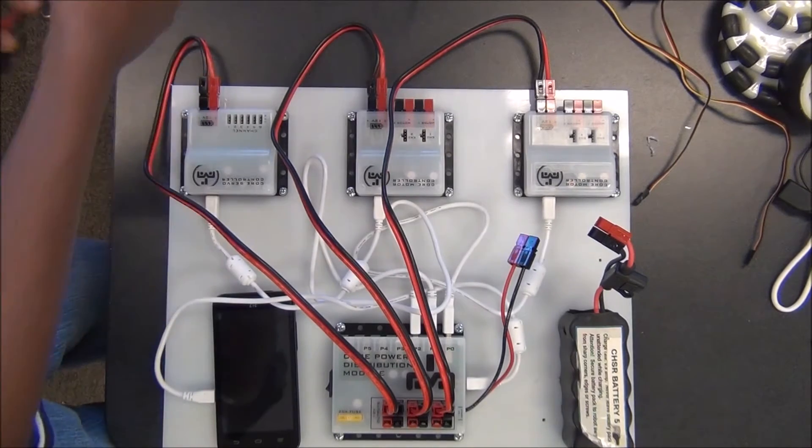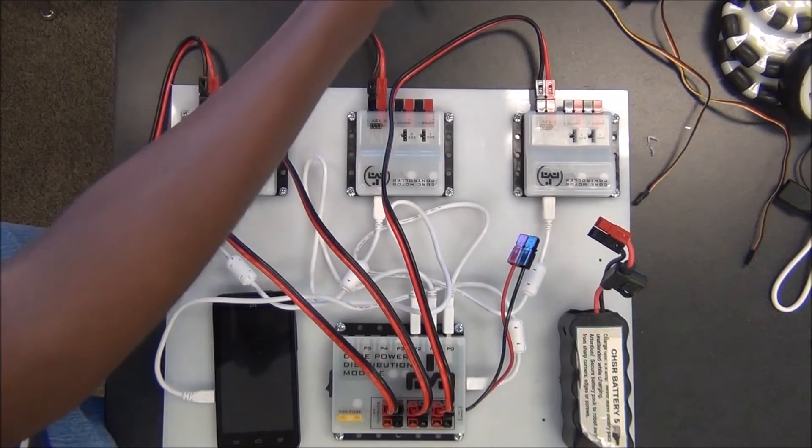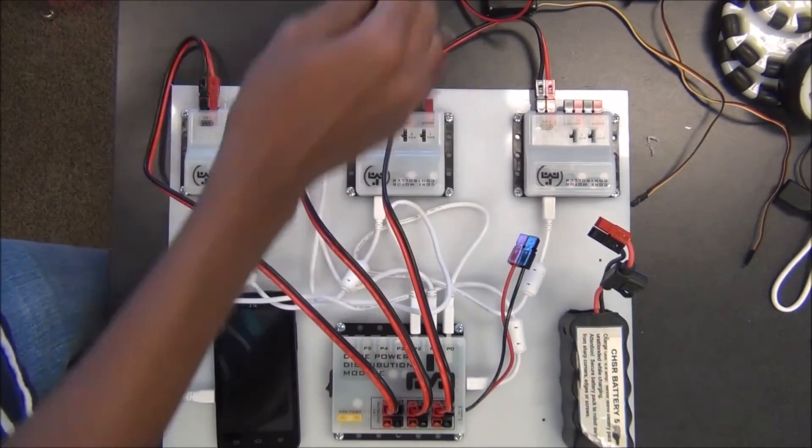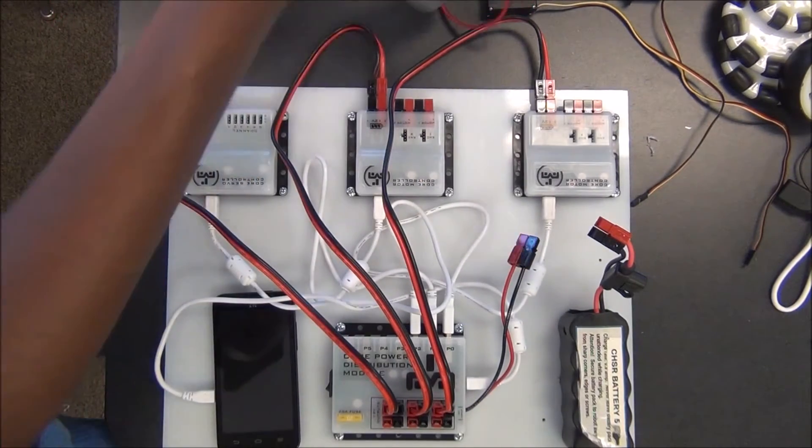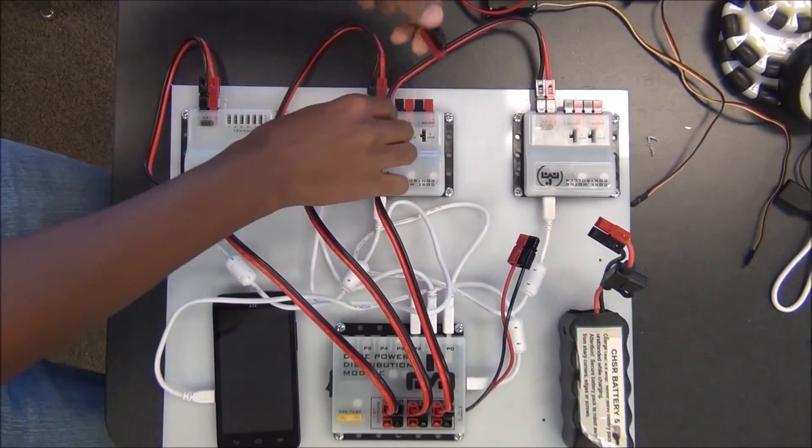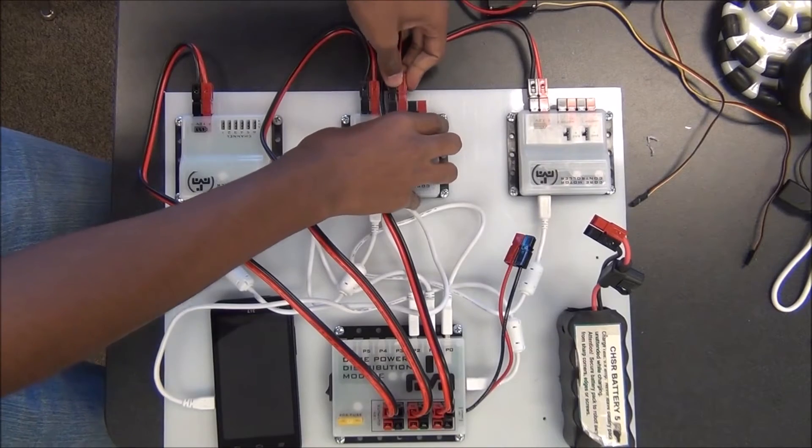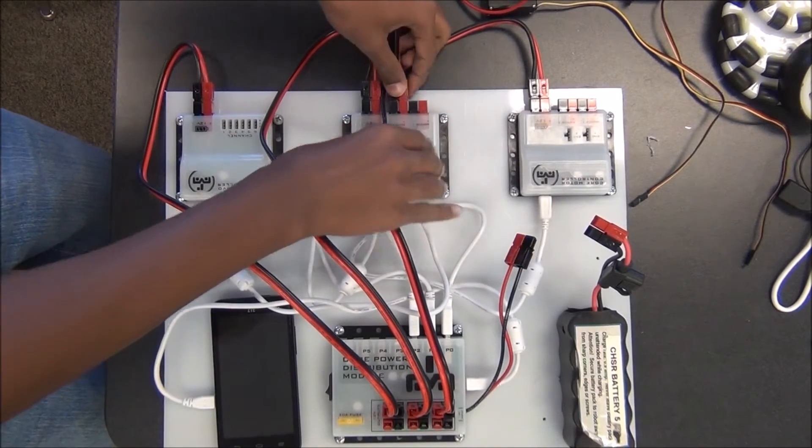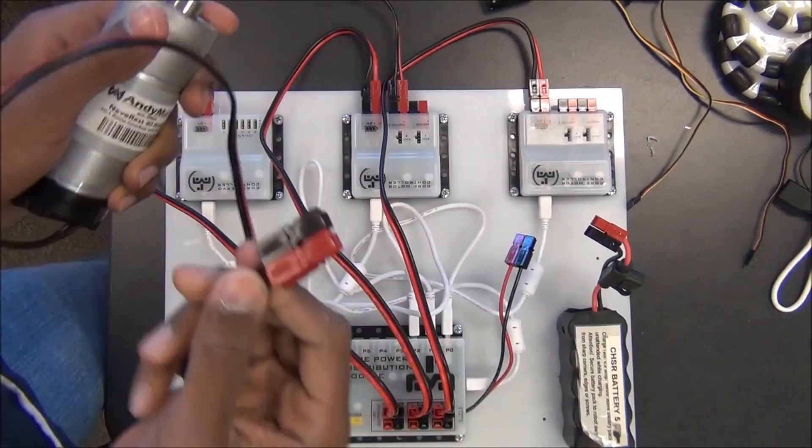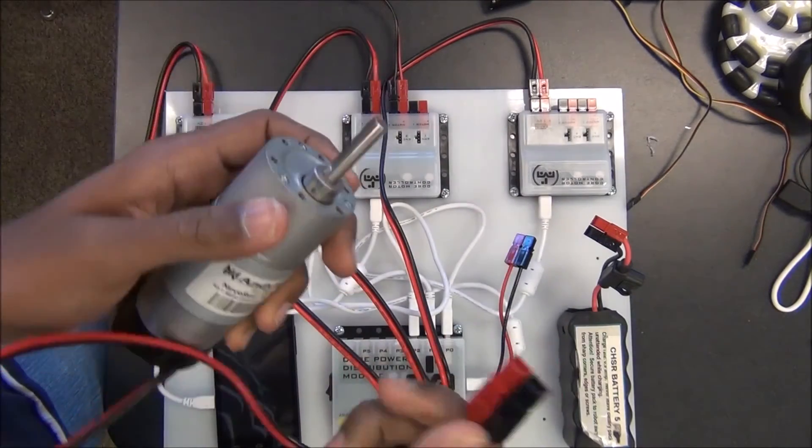Now I'm going to plug in some motors. Into the motor controller, the motor with the Anderson power pole connector at the end is easily plugged in, so I'm going to plug it into motor controller two. I'm going to plug in the other one into motor controller two as well.